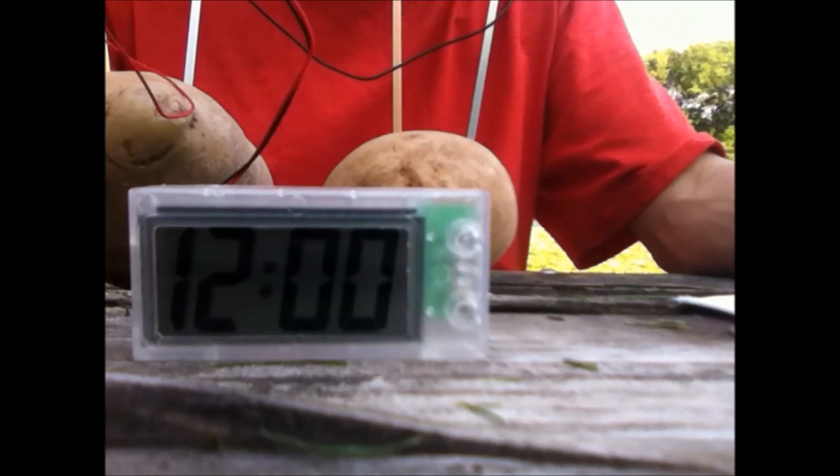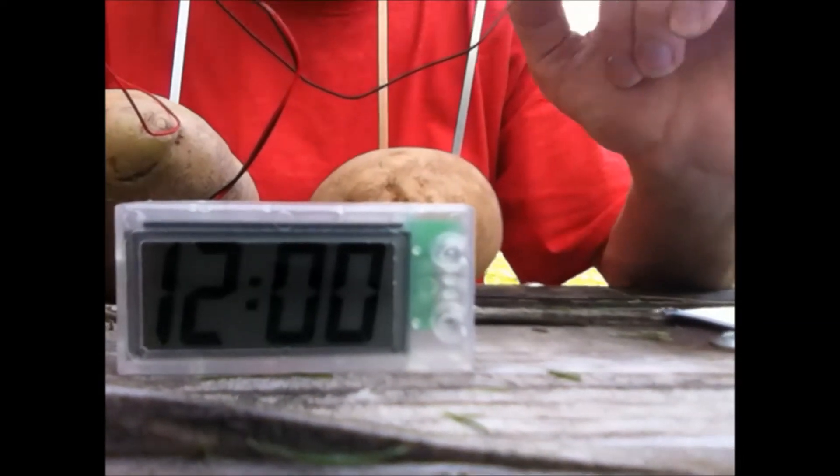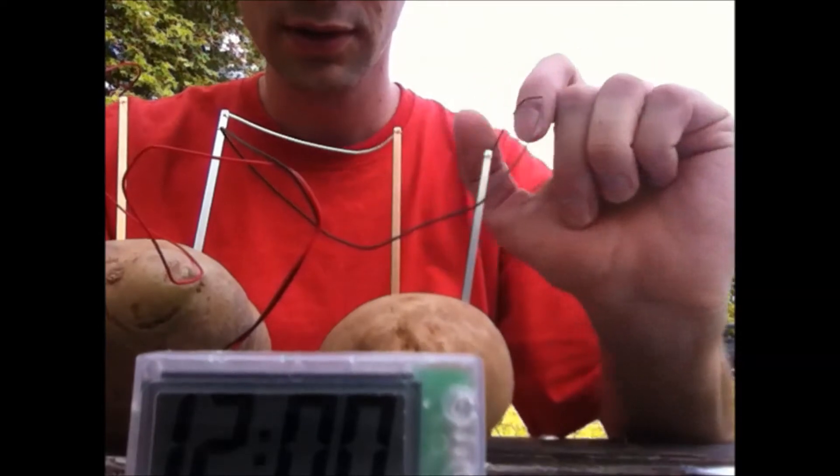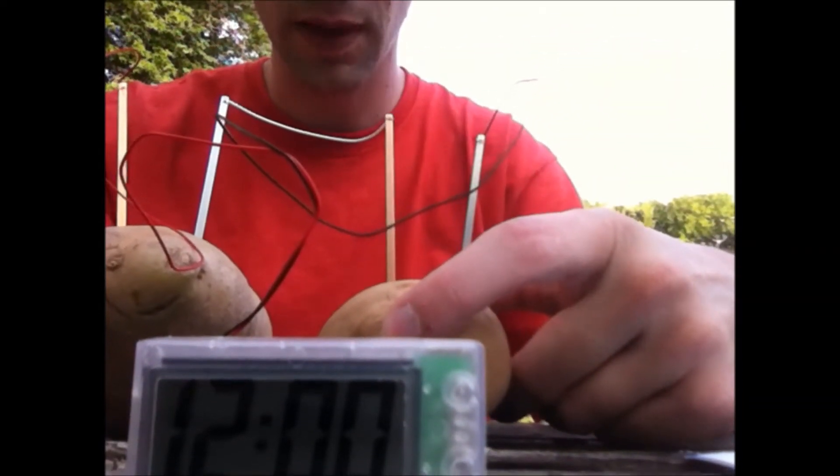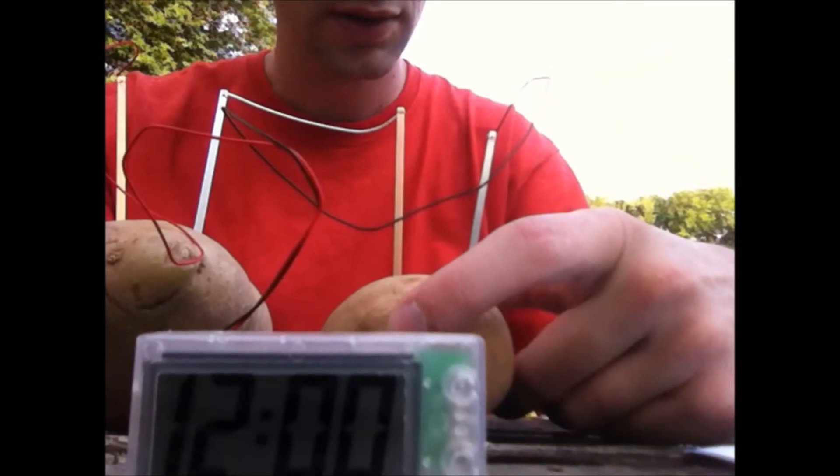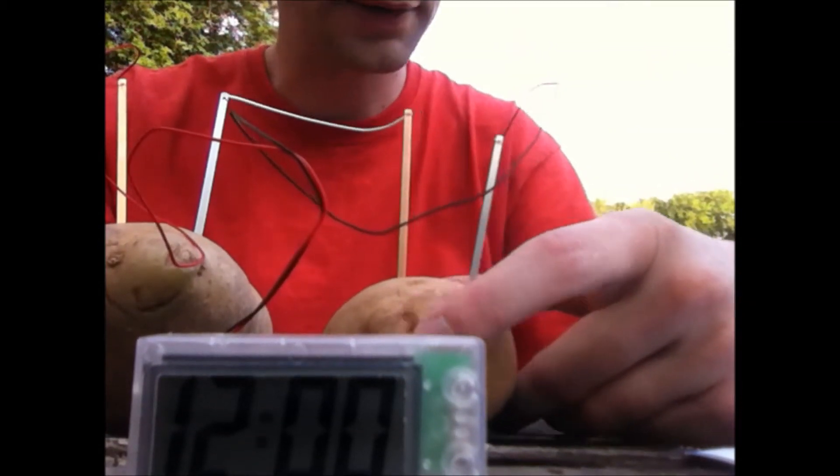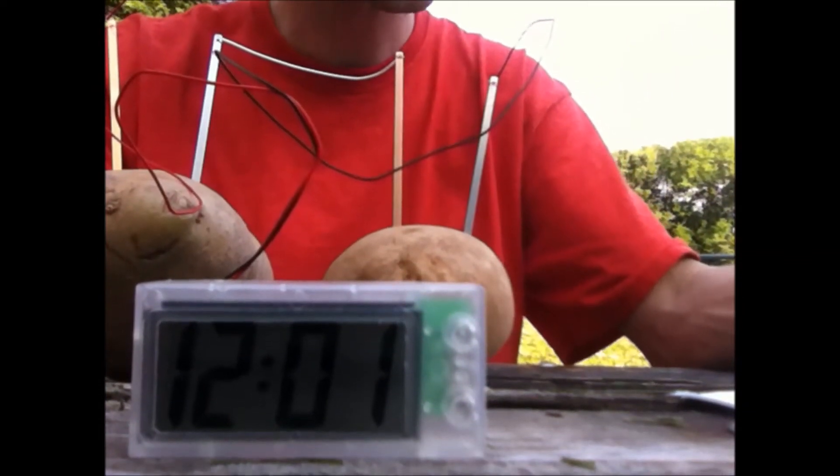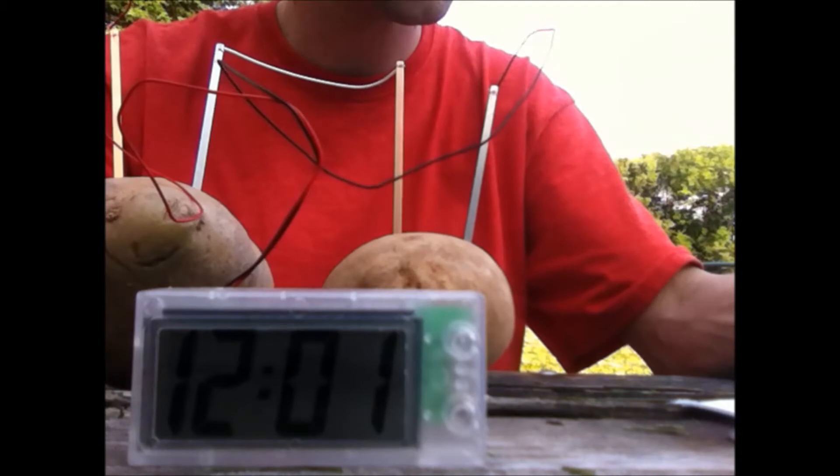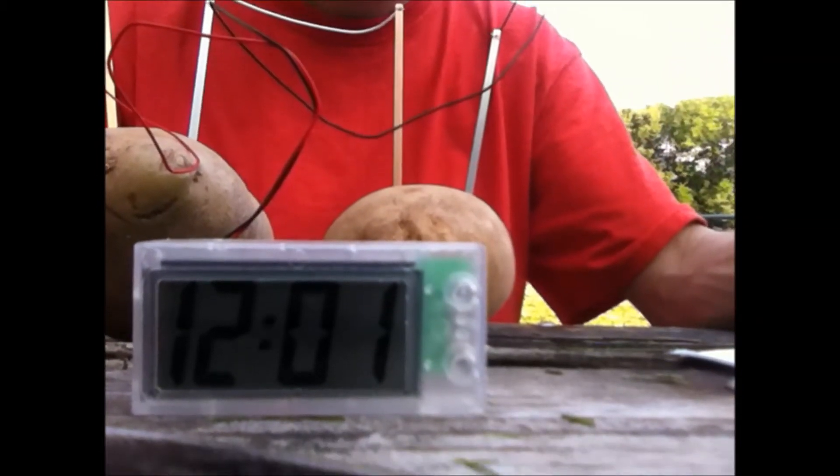This flow is called electric current. The electric current flows through these wires, through these electrodes, through the chemicals of the potatoes, charging it up with ions moving between the copper strips and the zinc. There's enough current here to power this clock.